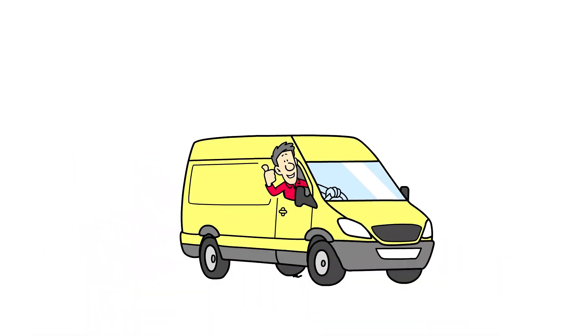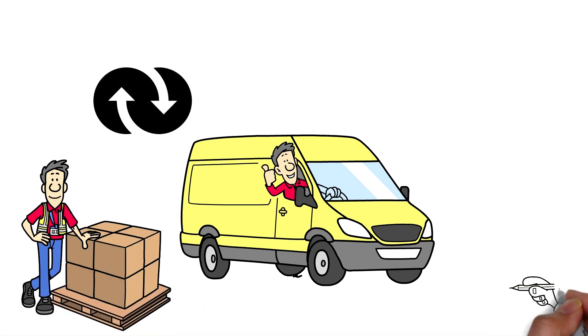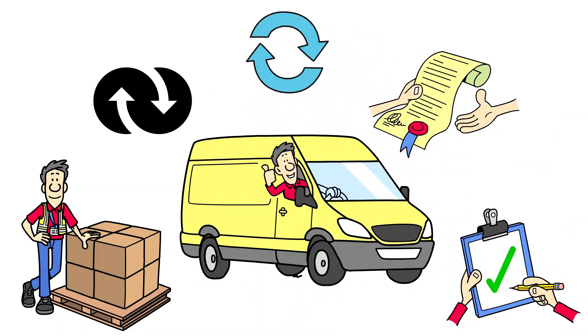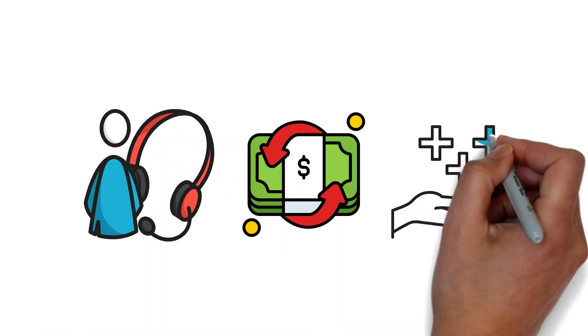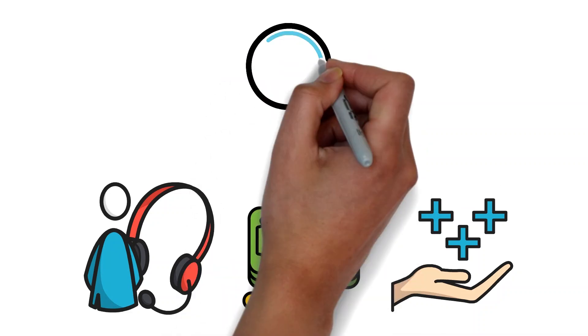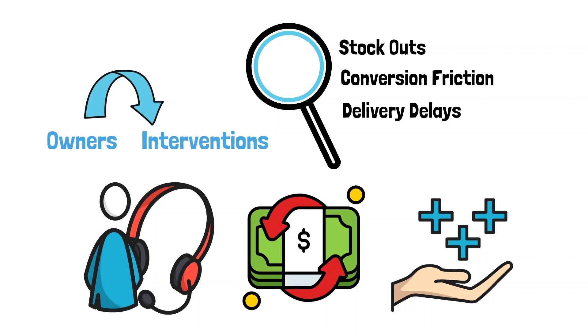North star: orders delivered on time. Inputs: in-stock percent, checkout conversion, carrier success rate, average SLA, repeat purchase rate. Guardrails: refund rate, complaint tickets, average support handle time. If the north star dips, you can trace which branch moved—stockouts, conversion friction, or delivery delays—and assign owners to interventions.